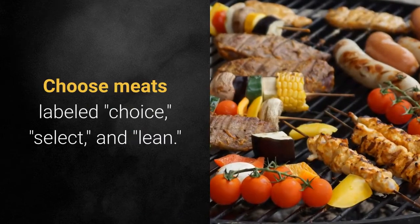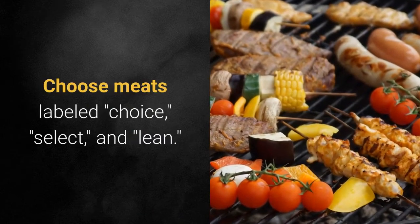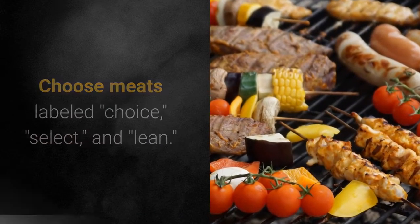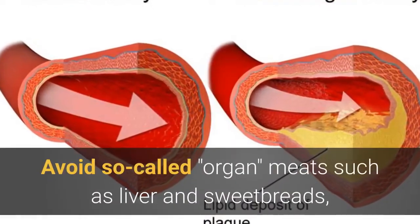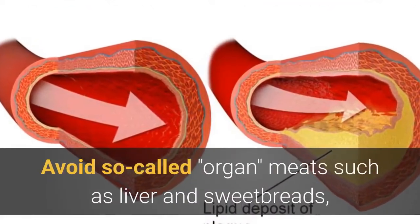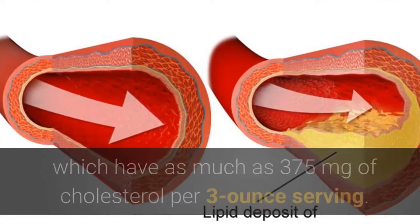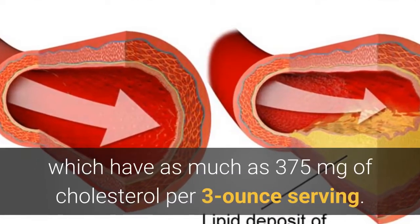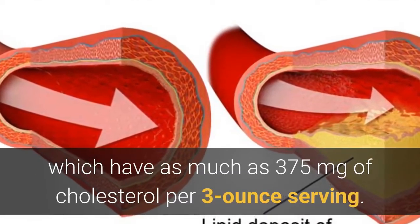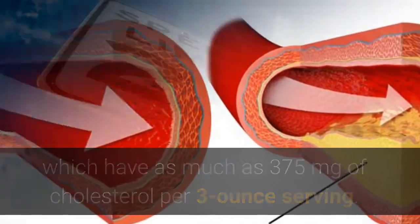Choose meats labeled choice, select, and lean. Avoid so-called organ meats such as liver and sweetbreads, which have as much as 375 mg of cholesterol per 3-ounce serving.